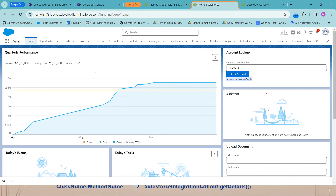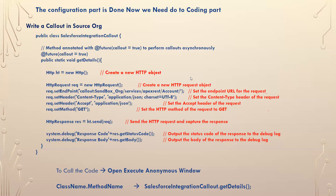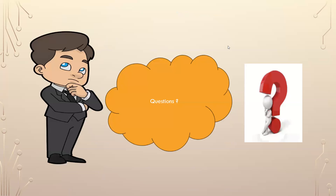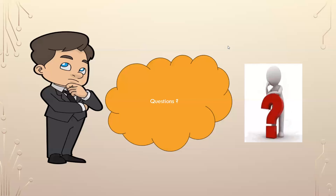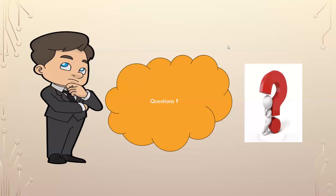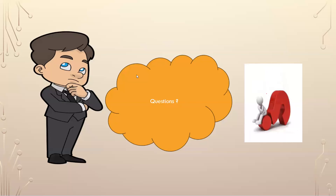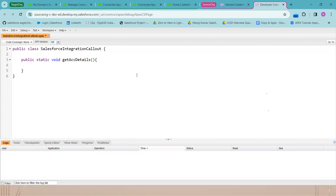Thank you, Manoj. I need to thank Sheikh also — he was also part of this module. Thank you, team, for this wonderful presentation. All the best. One more question: you opened the target org and source org in the same browser window — how did you do that? On the left side was the target org and the right side was the source org. You can use the tab group feature — move tab to a new group in Chrome.